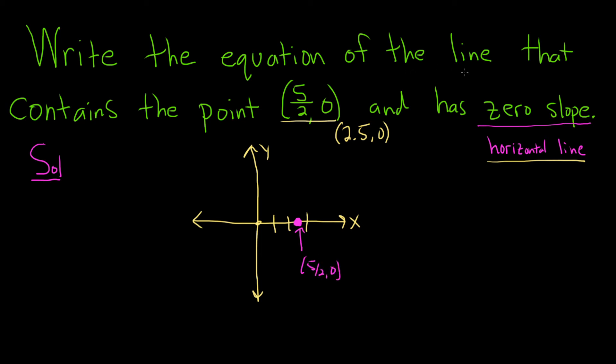Okay, and the line contains this point, so the line must pass through this point. That means the line has to touch there, but we know it's a horizontal line. So it must be this line, right? It must be this one because this is the only line that's horizontal and passes through that point.